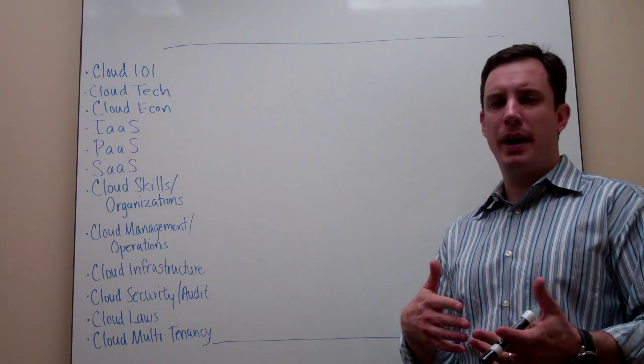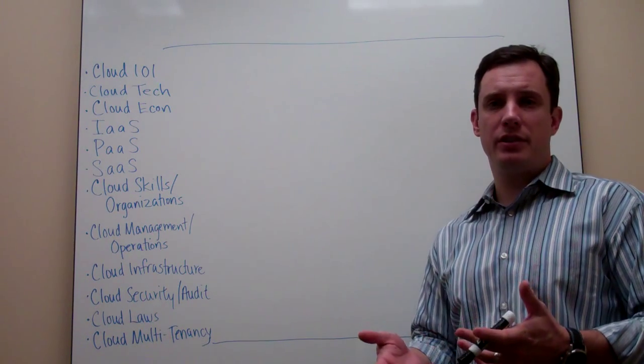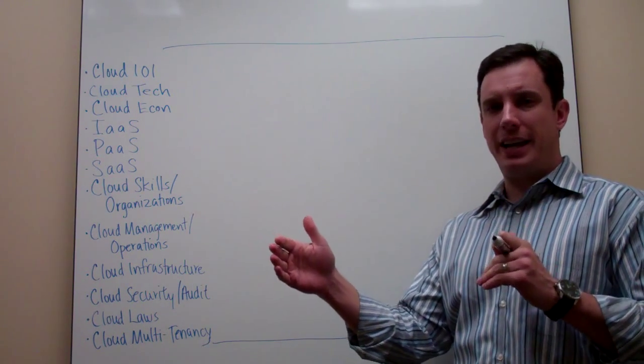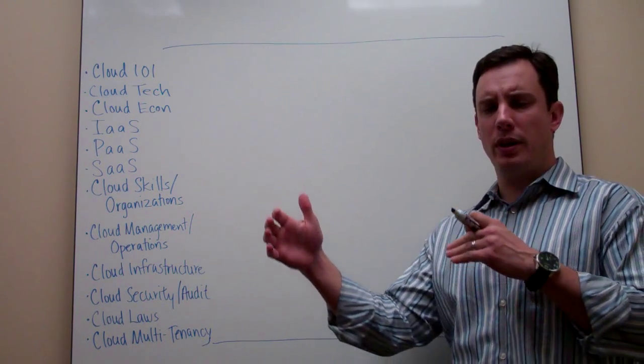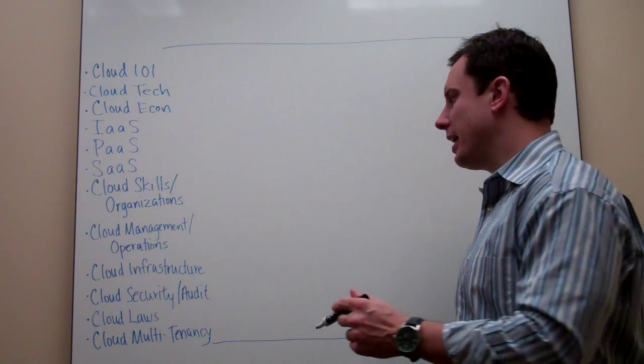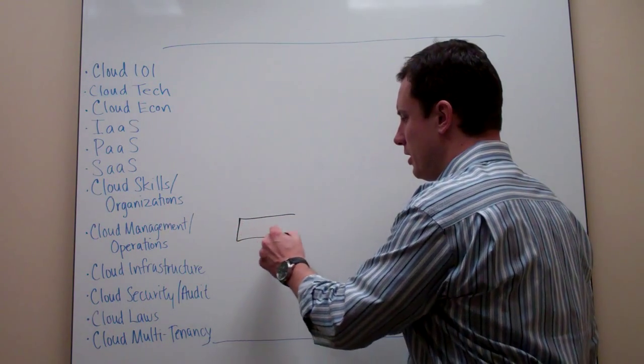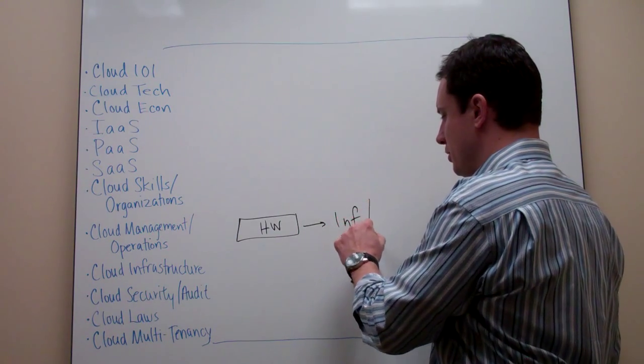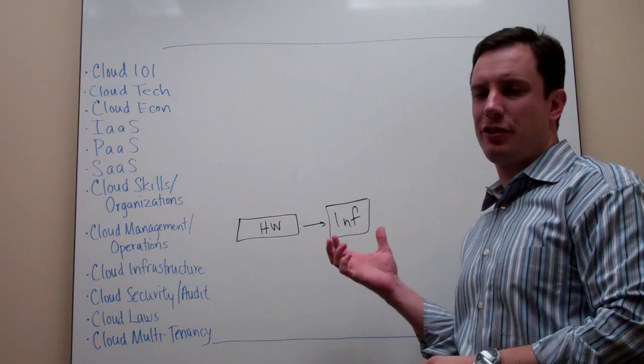Now, if we think back to what we talked about in a previous video where we tried to relate the various types of layers of computing with the layers of cloud computing, we got to this analogy where we said you had hardware, which relates to infrastructure, which is what we talked about, infrastructure as a service.